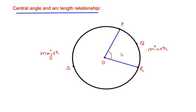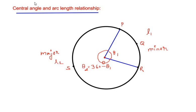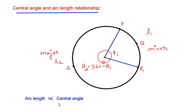Let me take the central angle of this minor arc as theta 1 and the length of arc PQR as l1. Since theta 1 is at the center of the circle at point O, the remaining part of the angle is going to be 360 degrees minus theta 1. Let me call it theta 2 — that is the central angle of the major arc. Let me consider the length of this major arc as l2. The relationship between the central angle and the arc length is that arc length is proportional to the central angle.